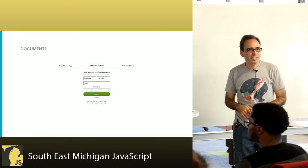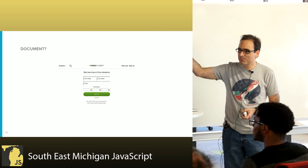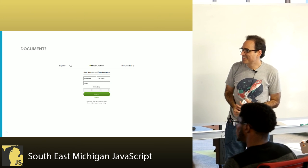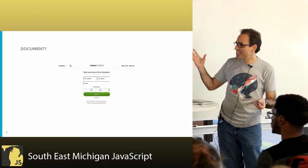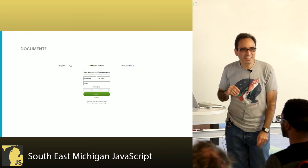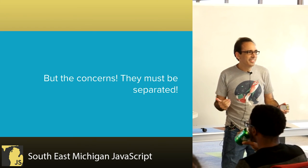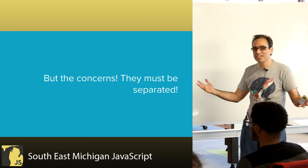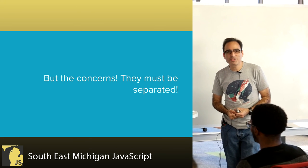A lot of JavaScript developers are working on things that look more like our login form — that doesn't look like a document. Maybe we should just put our styles in JavaScript, because we're not really working on documents. The argument that comes against that is separation of concerns — you must separate these things. If it's good for documents, surely it must be good for user interfaces also, right?